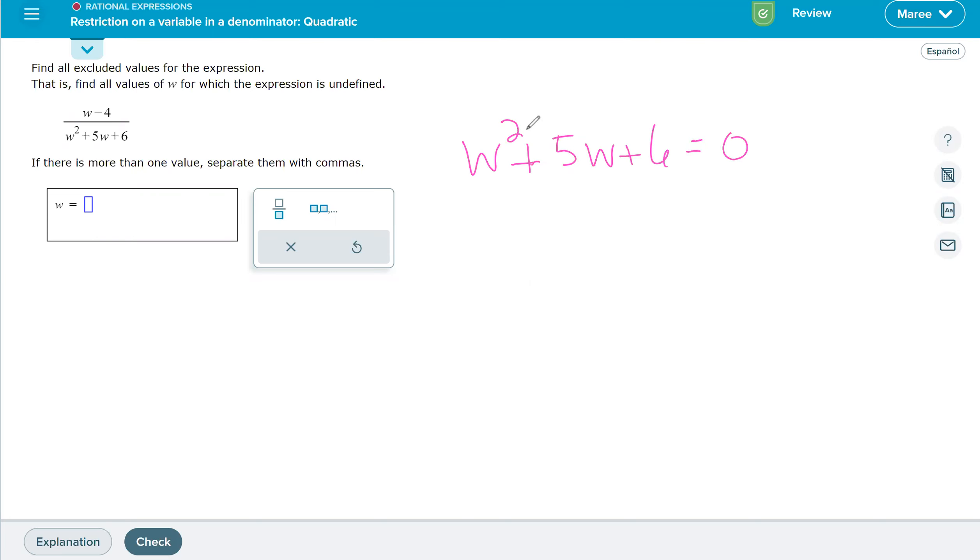So our factors will be w plus three and w plus two equals zero. By the zero product property, which means anything multiplied by zero is equal to zero, one or the other of these can be equal to zero. So w can be negative three or negative two.